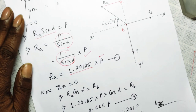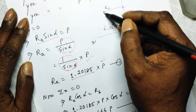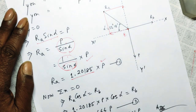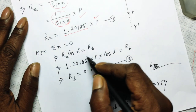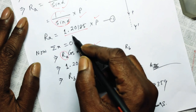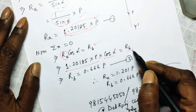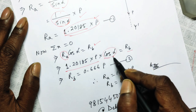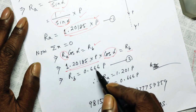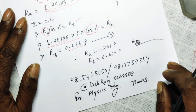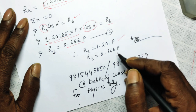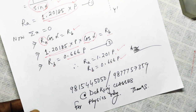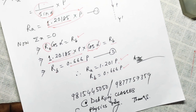Applying ΣX = 0: R_B is along the positive X-axis and the component of R_A along the negative X-axis is R_A times cos(alpha). Therefore R_B = R_A × cos(alpha). Substituting R_A = 1.20185P and the value of alpha, R_B = 0.666 × P. So both reactions are found: R_A = 1.20185P and R_B = 0.666P, where P is the vertical load applied at the midpoint of side AC of bar ACB.